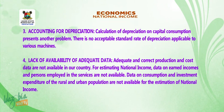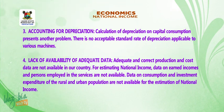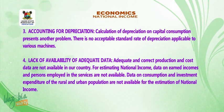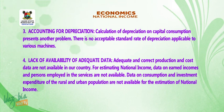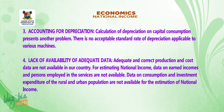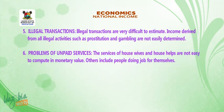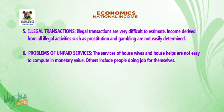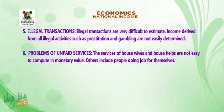4. Lack of availability of adequate data. Adequate and correct production and cost data are not available. For estimating national income, data on unrecorded incomes and persons employed in the services are not available. Data on consumption and investment expenditure of the rural and urban population are also not available. 5. Illegal transactions. Illegal transactions are very difficult to estimate. Income derived from illegal activities such as prostitution and gambling are not easily determined.